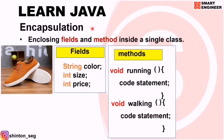In this video we are going to learn about encapsulation. Encapsulation means enclosing fields and methods inside a single class. For example, take the object 'shoes'. The variables for shoes are color, size, and price. In Java, these variables are called fields or attributes.